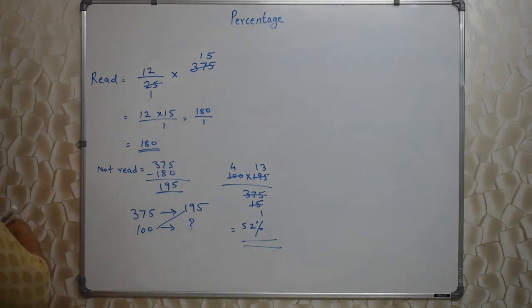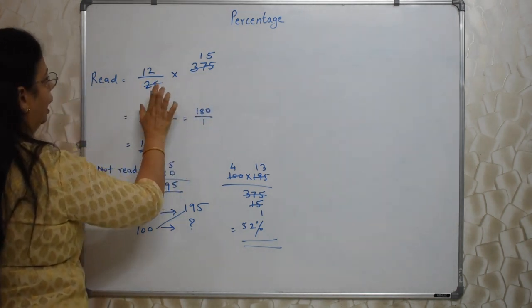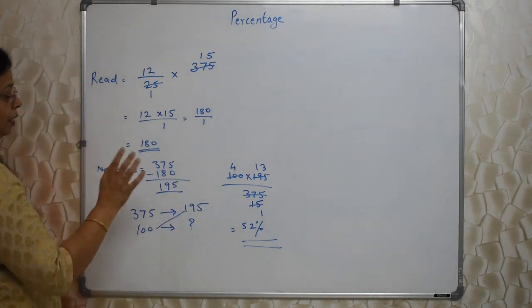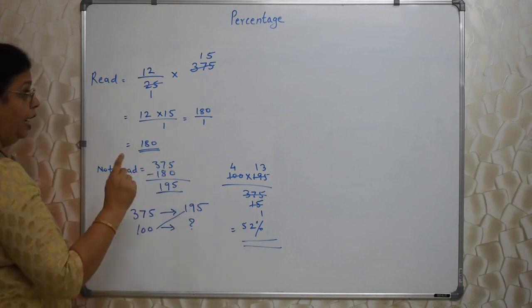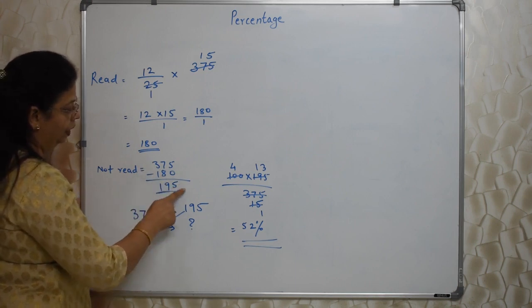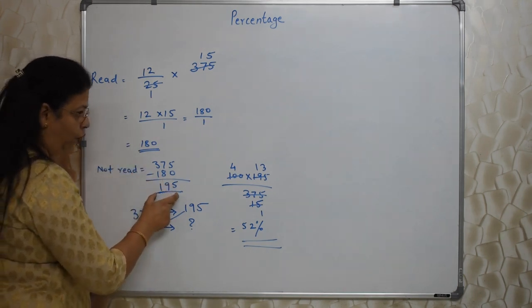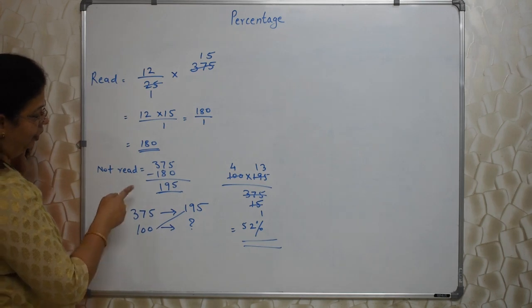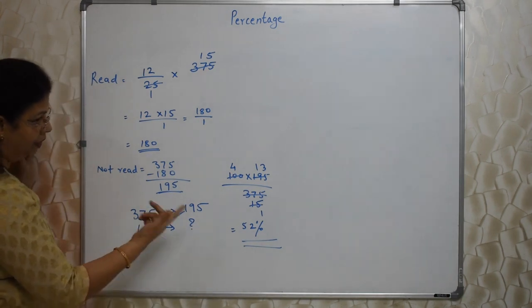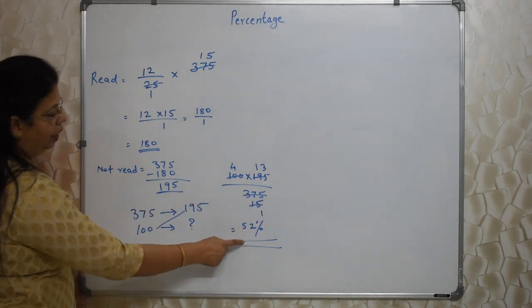What I have done? Red ka jo diya hai, 12 upon 25 of total, that I found out ki 180 pages to reading ho gya hai. Kitna reading mehi hua hai, they have not asked. How many pages are yet to be read? No. They are asking, what is the percentage of not read portion? So that's why being found out, actual pages kitne pade nahi hai, 195, total. But they don't want this. So again we did this. 375 total pages jabhi rehta hai, tabhi 195 nahi pada hai. Agar 100, percent means about 100, 100 hai, toh kitne pages. So cross multiplication karke, I have correct that answer.